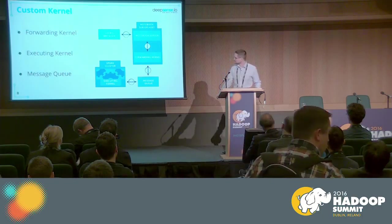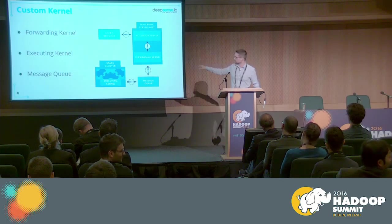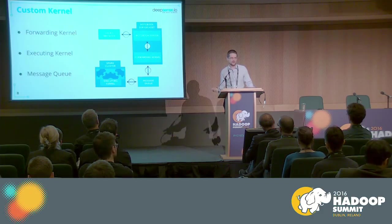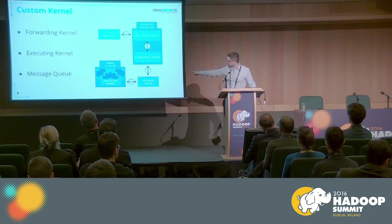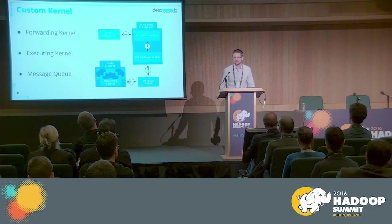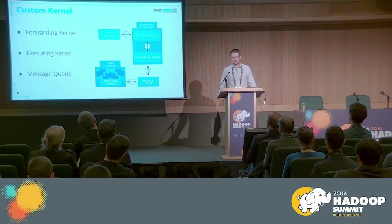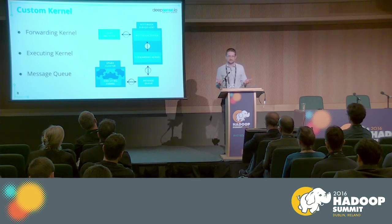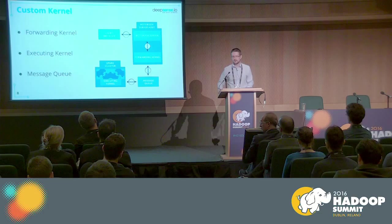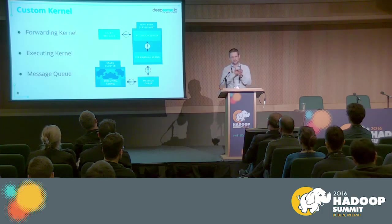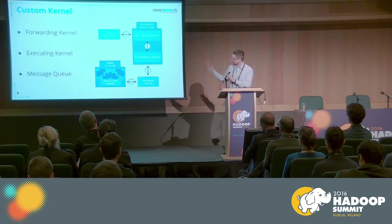What the forwarding kernel does is pass all the commands from the notebook server — like heartbeats, requests for code execution, requests for restart and shutdowns — through this message queue. They come out the other side and are received by our second interesting component called the Executing Kernel. This one, when you look at it from afar, just executes the code and returns the results via message queue. But when you look at it a bit closer, it actually acts as another forwarder: it receives those messages from the message queue and sends them to an actual IPython kernel that it has started inside it.